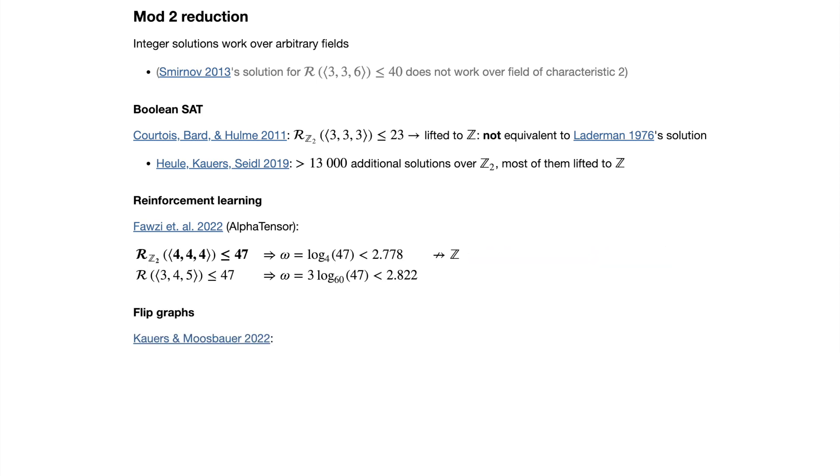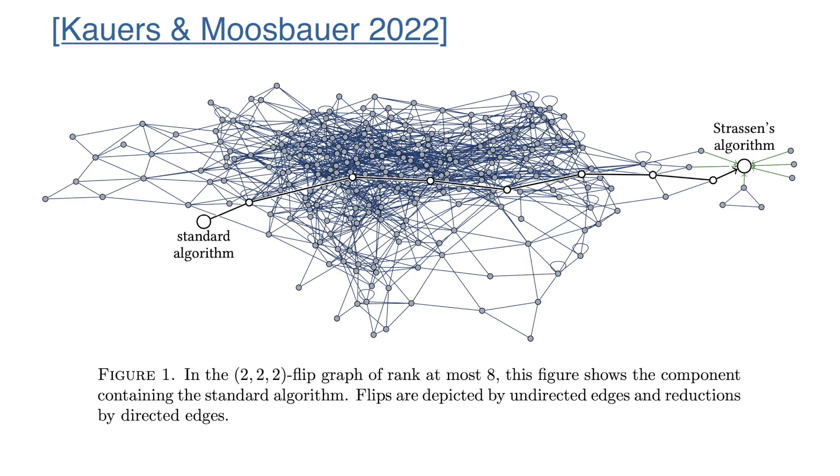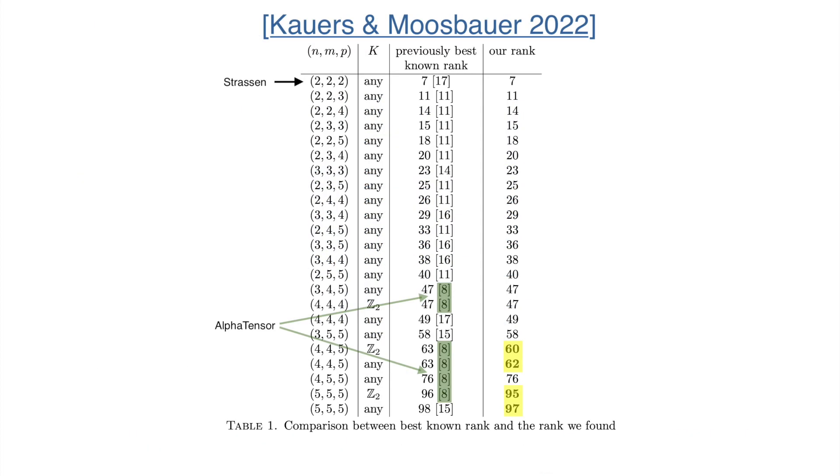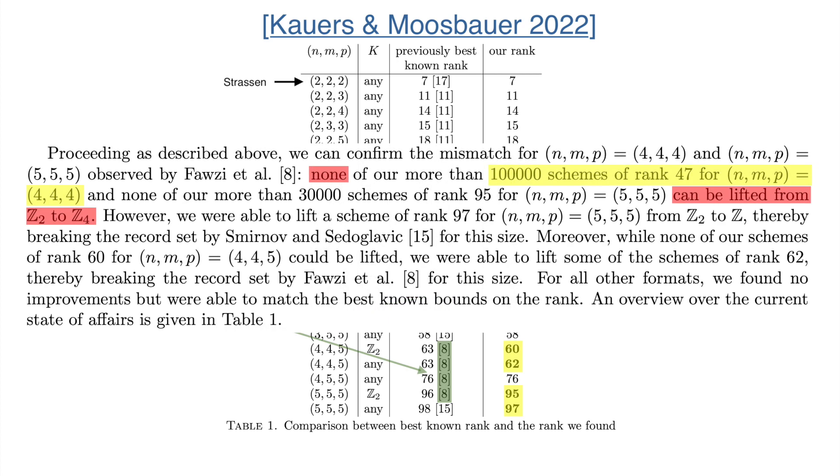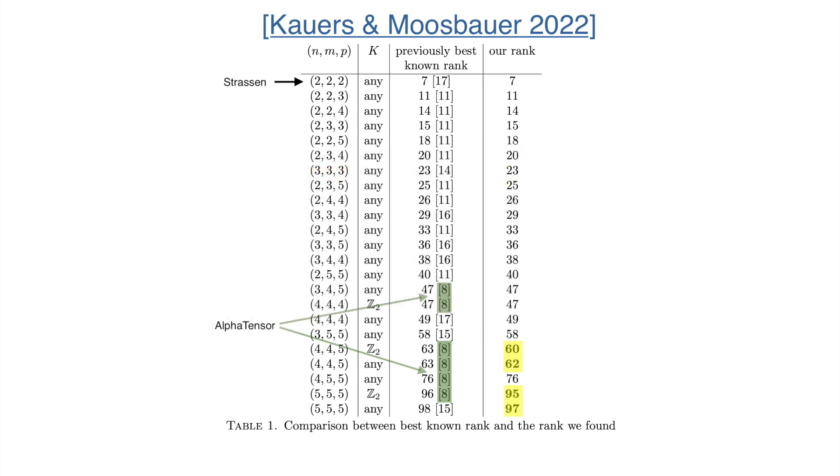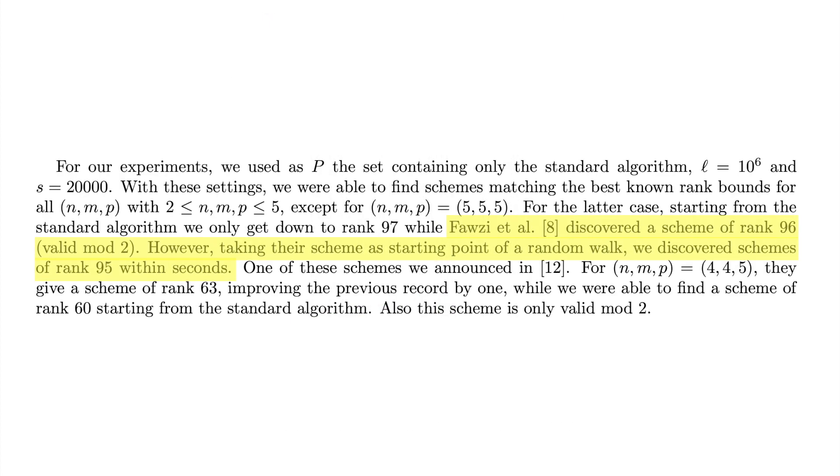Cowles and Mosbauer use a new technique called flip graphs. What you do is start with an arbitrary decomposition, then repeatedly apply flip transformations, where you change two product terms at a time that share a common factor, and if possible, reduce the total rank by 1 using a specific factoring technique. If you construct a graph where each vertex represents a decomposition, and two vertices are adjacent if they are one flip transformation apart, then we are essentially taking a random walk in this graph. Cowles and Mosbauer matched many previous records, including over 100,000 rank 47 decompositions for 4×4×4 over integers mod 2. They also improved a few records, including some set by AlphaTensor. For their 5×5×5 record over mod 2, they actually used AlphaTensor's solution as the initial decomposition.